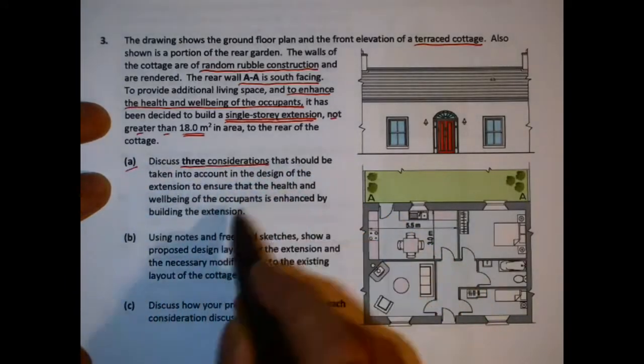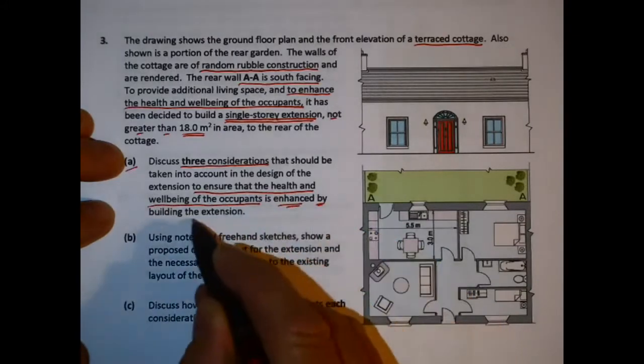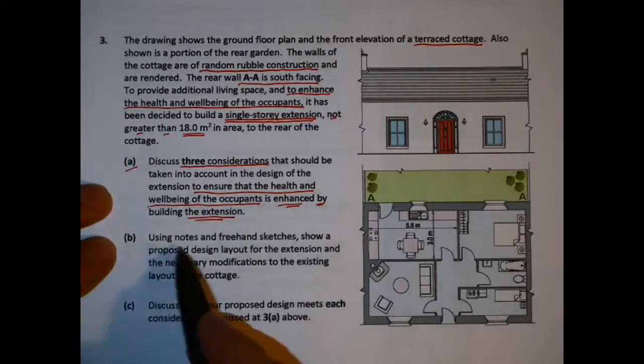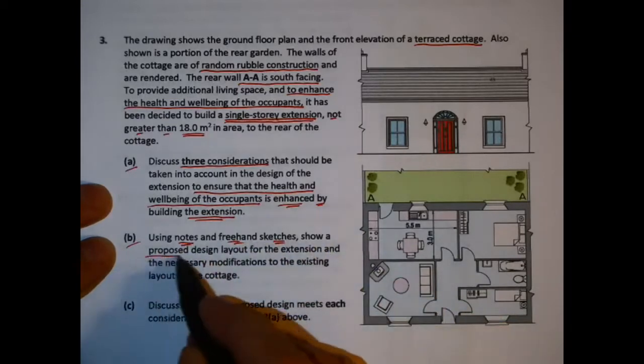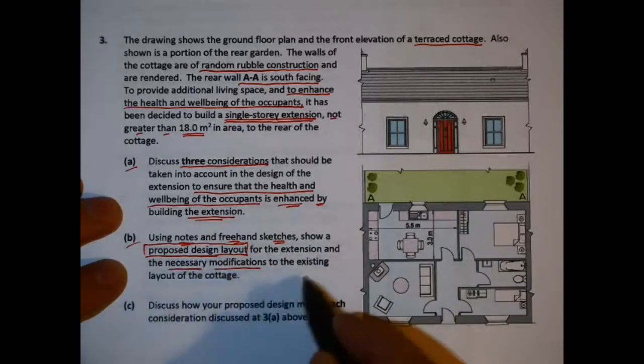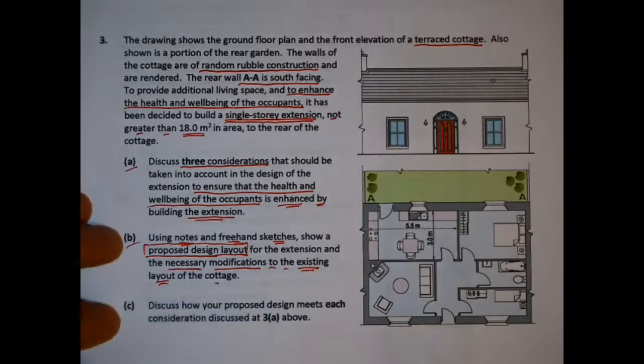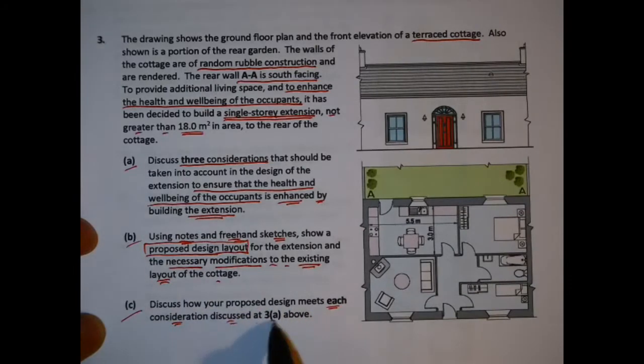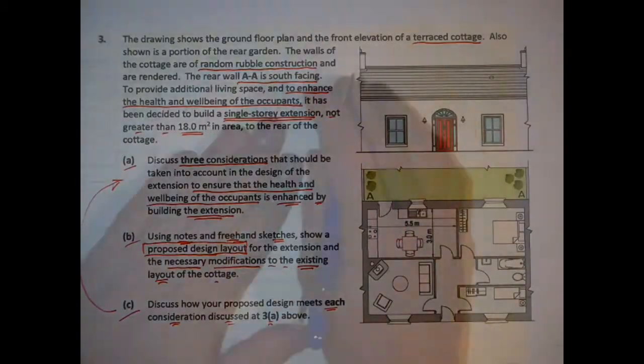We have part A to give three considerations that ensure the health and well-being of the occupants by this extension. Part B is to draw a proposed layout of the extension and the necessary modifications to the existing layout of the cottage. And part C refers back to A and we have to show how we included each of their considerations in our proposed design.